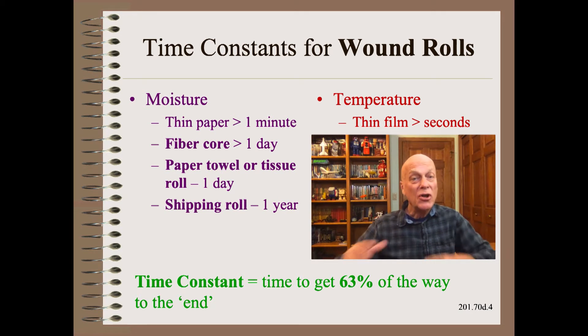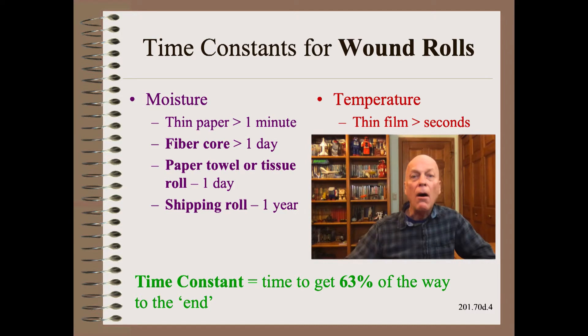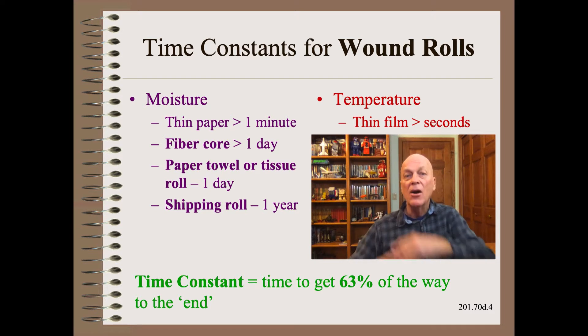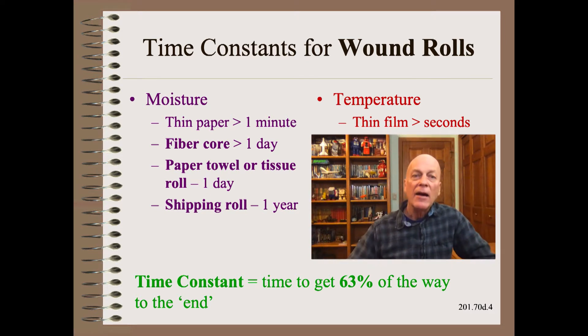If the object is bigger than a sheet of paper, say a fiber core or a paper towel roll or a bathroom tissue roll, all have similar area to weight ratios. The time constant is about one day. Shipping rolls of paper, say one meter in diameter by one meter wide, have time constants of about one year.